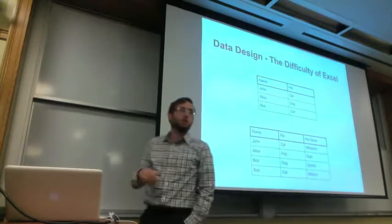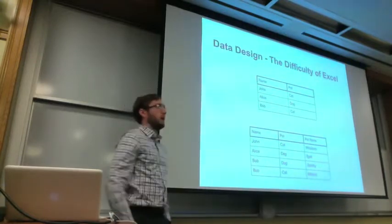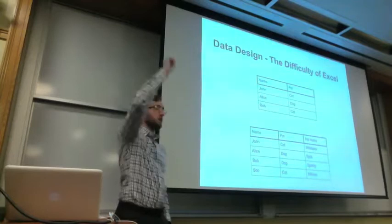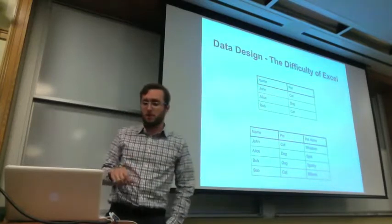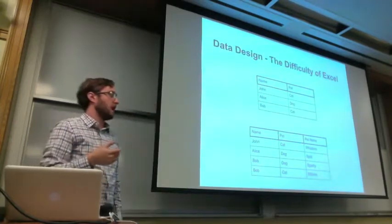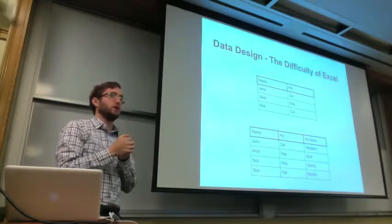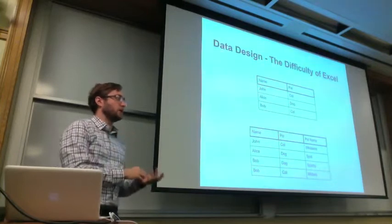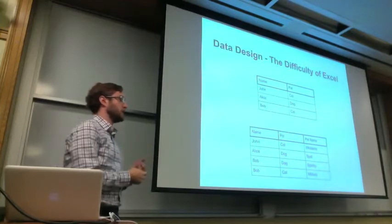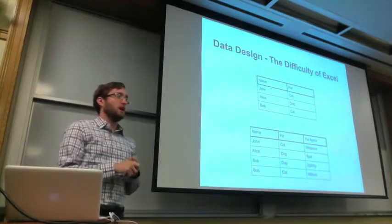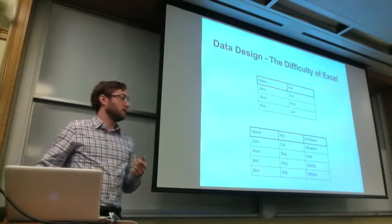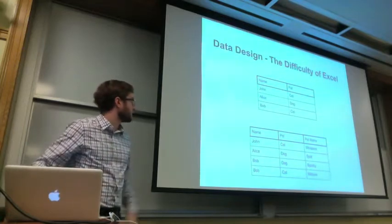...instance of Bob gets updated. You could do that by sorting by the ID column and making sure it's all together and filling down, but it becomes easy to have Bob with two different addresses. Then when some poor SI student comes back to it three years later, they're trying to figure out which address is the right one, and the phone book maybe, but that's the only way to solve that problem.